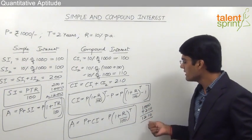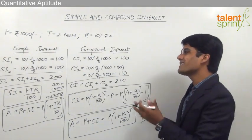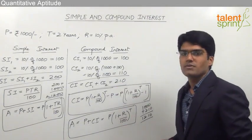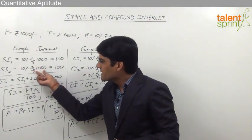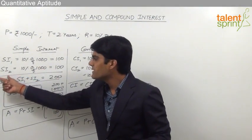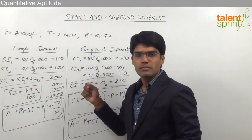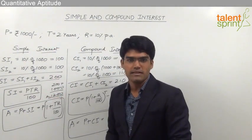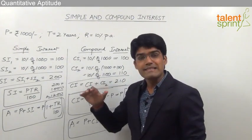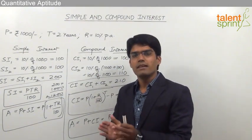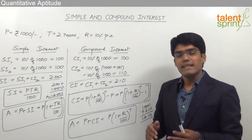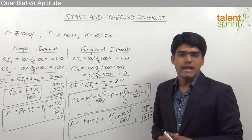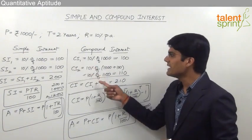This is the difference between simple interest and compound interest calculation. In simple interest, the principal remains constant — even for the third year SI is 10% of 1000 = 100 rupees, and it continues to be 1000 in the fourth year. This is because in simple interest the interest is paid as and when it is generated — 100 rupees is paid at the end of every year. But in compound interest the interest is not paid regularly; it gets added to the principal, so the principal changes.